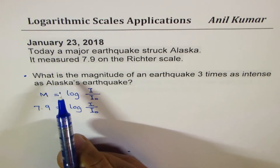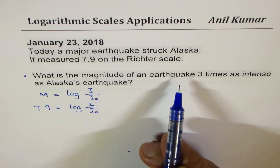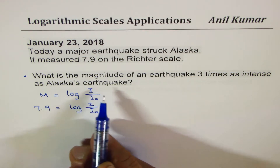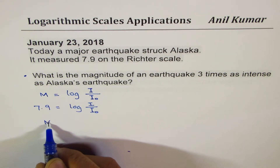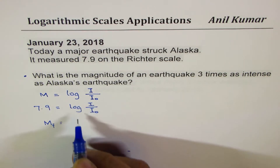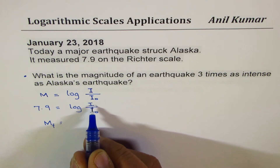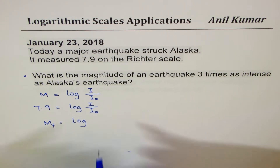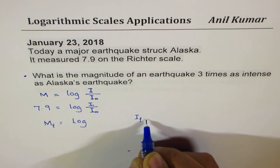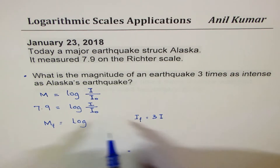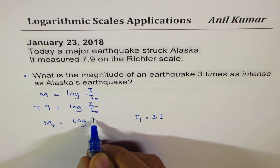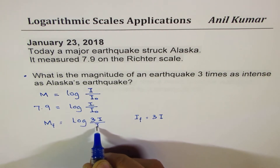The question is: what is the magnitude of the earthquake three times as intense? We want to find the magnitude — that is what we need to find — which is three times as intense as this earthquake. That means the intensity I we want to find is actually three times the intensity Alaska's earthquake had. So we write this as log of 3I over I₀.